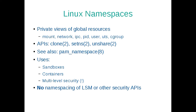Namespaces provide private views of global resources. In a mount namespace, for example, you can have a private view of the temporary directory that no one else can see inside. Other namespaced resources include networking and IPC. Several things are not yet namespaced — pretty much all of the security APIs and global features including LSM, key rings, seccomp, and time. Uses of namespaces include sandboxes, containers, and multi-level security — including as a way to provide private views of directories to prevent leaking information about whether a certain filename has been created.